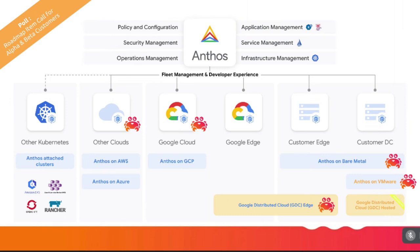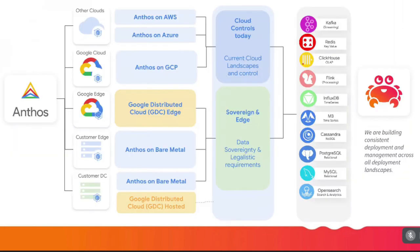We are currently doing an alpha and trial run for Anthos on bare metal, Anthos on VMware, and GDC Apps, building a product to deploy our services so customers in on-premises environments can get the same benefits as those deployed on public cloud. At the end state, we want to be able to deploy all 10 of our services wherever Anthos can be deployed, so no matter what your cloud choice, you always have the same consistency for both compute and data platform.